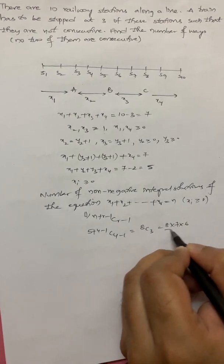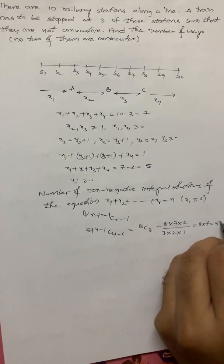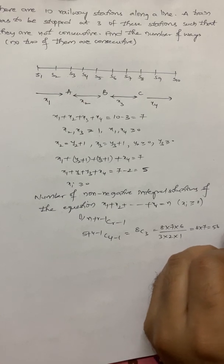8 into 7 into 6 by 3 into 2 into 1. 8 into 7, 56. The number of ways in which we can do this is 56 ways.